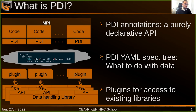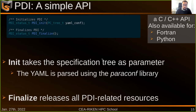In practice, how does it work? The PDI API is very simple. We first have two functions for initialization and finalization. The initialization function takes the specification tree — the YAML specification tree — as a parameter. The finalization function will just release all PDI-related resources.